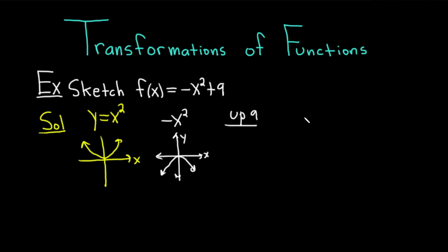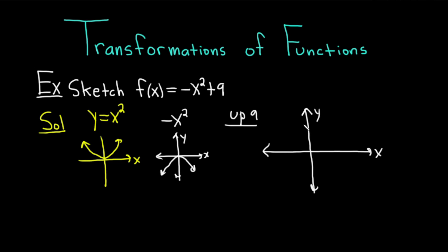Let's go ahead and sketch the final graph here. We have the y-axis and the x-axis. We're basically taking this upside down u and going up 9 units. I'm not going to draw this to scale, so what I'm going to do is put a 9 here, because we know that's where it starts, and then it just goes straight down like this on both sides.